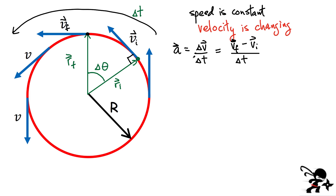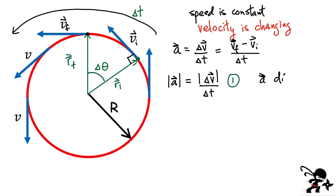We have two things to show. First, what is the magnitude? We need to show how big the delta v vector is divided by delta t — delta t is just a scalar. Second, what is the direction of this acceleration vector? The direction of vector a has to be the same as the direction of vector delta v, because dividing a vector by a scalar doesn't change the direction. So the direction of a equals the direction of delta v.